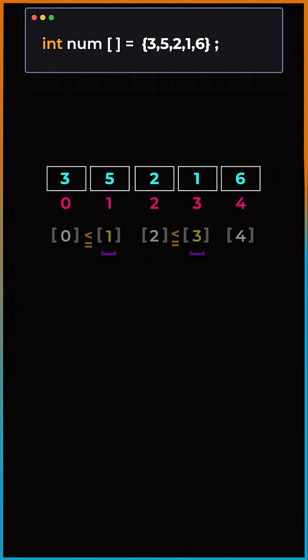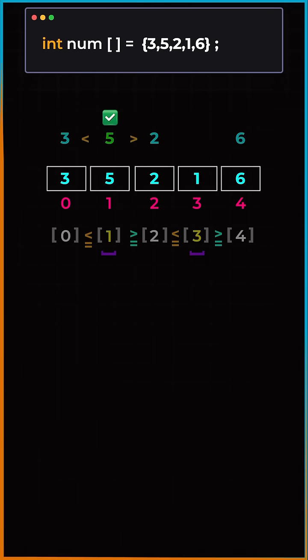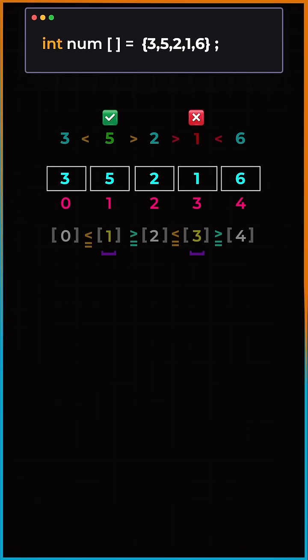even index numbers should always be less than or equal to the next index number. So for our array, 5 is in perfect position because 5 is greater than both 3 and 2, but the number 1 is actually not in the correct position because 1 is less than both 2 and 6.